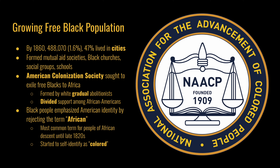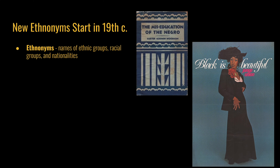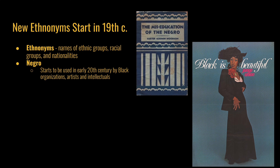The Niagara Movement, which preceded the NAACP, was founded by W.E.B. Du Bois and others in 1905 to oppose racial segregation and disenfranchisement. At the end of the 19th century, new ethnonyms — names for ethnic, racial, or national groups — emerged for black people. They had started using the term colored in the 19th century, and in the early 20th century there was a shift to using the word Negro.